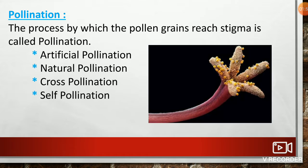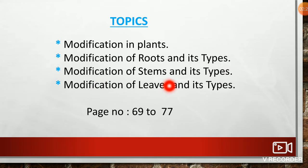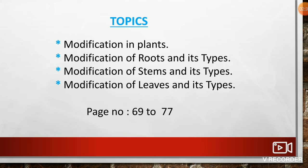I hope you all are clear with the recall session. Now let us continue with the lesson. The topics we are going to discuss today are: modification in plants, modification of roots and its types, modification of stems and its types, and modification of leaves and its types. In your textbook, these topics are available from page number 69 to 77.